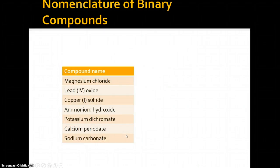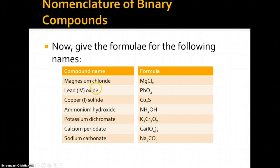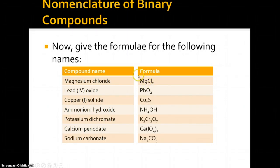Now let's look at a few more binary compounds and see if you can name these. MgCl2 is magnesium chloride — this time the name was given and you had to recall the oxidation numbers. Chlorine is a halogen so we treat it as −1; magnesium is +2, so two −1s balance the +2, giving MgCl2. You'll learn in Grade 12 that chlorine actually has many oxidation numbers, but here we use the most common ones.